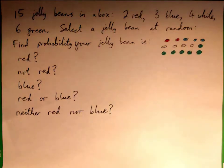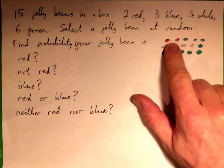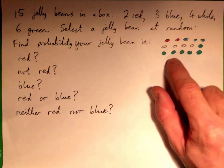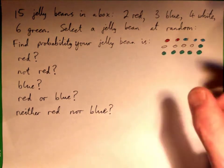Oh, there we go. So we got 15 jelly beans in a box: two red, three blue, four white, and six green. We select one at random.